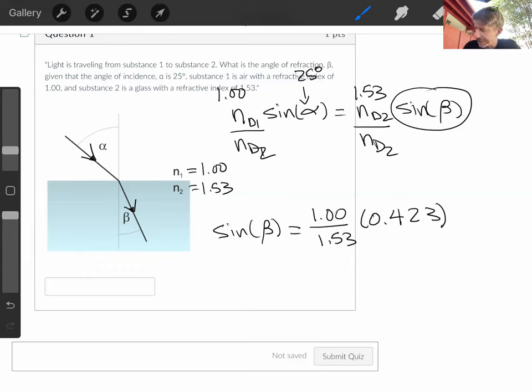Multiplying that out, we get 1 times 0.423, which is just 0.423, divided by 1.53. And I get 0.276, which is sine of beta. But that's not what we're looking for. We're looking for beta.